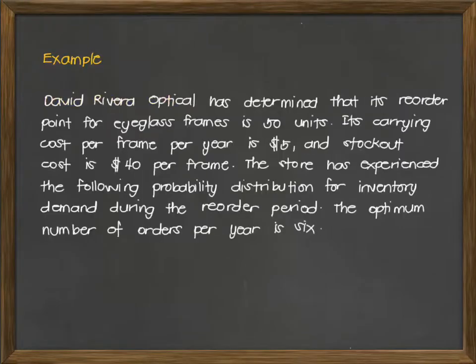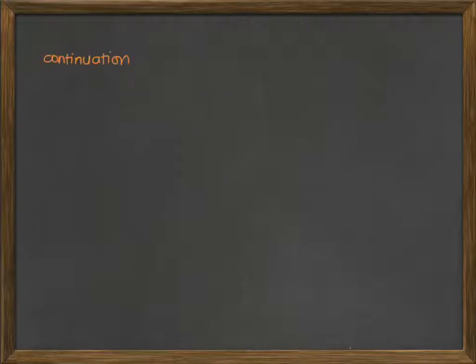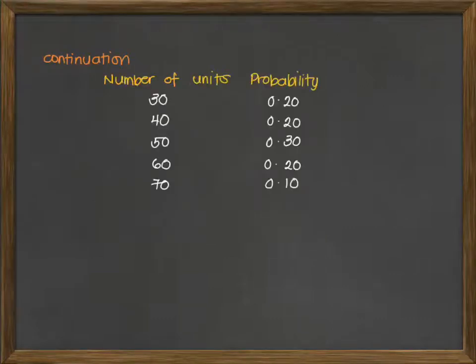For an example, David Rivera Optical has determined that its reorder point for eyeglass frames is 50 units. Its carrying cost per frame per year is $5 and stock out cost is $40 per frame. The store has experienced the following probability distribution for inventory demand during the reorder period. The optimum number of orders per year is 6. We have the following table to represent our given information.